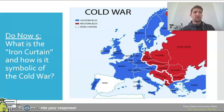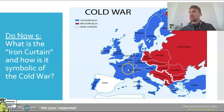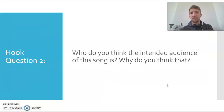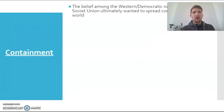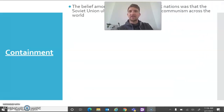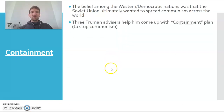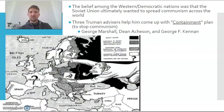Today we're looking at the idea of containment. The great fear of the capitalist western nations is that the communist eastern nations want to continue to spread their influence and take over all of Europe and eventually the world. The Americans and the democratic western nations are going to come up with a plan called containment — to contain or stop the spread of communism. Containment is the belief that the Soviet Union wants to spread communism across the world, and Truman and his advisors want to stop that.